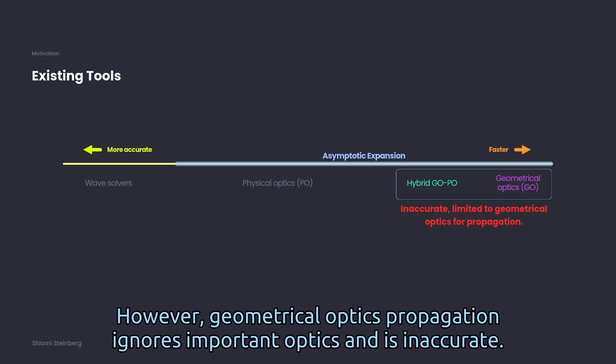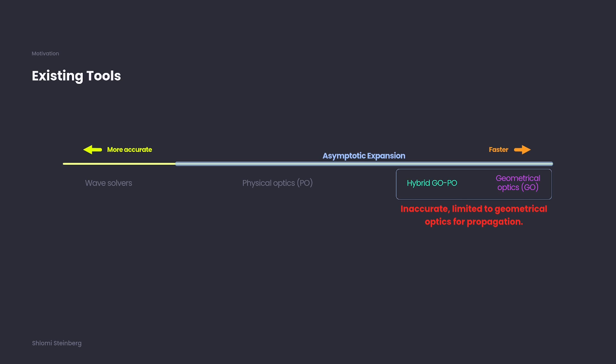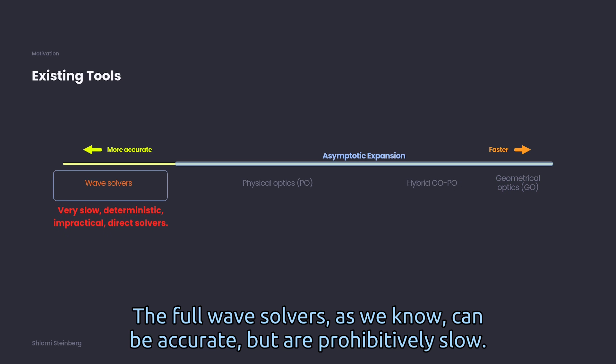However, geometrical optics propagation ignores important wave optics and is inaccurate. The full-wave solvers, as we know, can be accurate but are prohibitively slow.